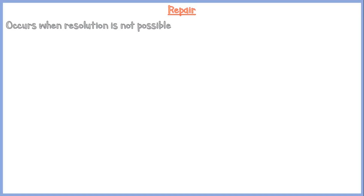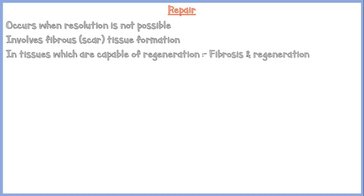The other way of healing is repair. It occurs when resolution is not possible — in other words, when the tissue is not capable of regeneration or when the extracellular matrix framework of the tissue is damaged. The repairing process involves scar tissue formation, also known as fibrosis. Wounds in tissues which are capable of regeneration will heal by both regeneration and fibrosis.